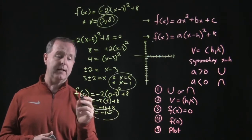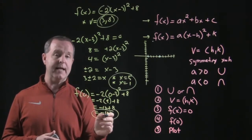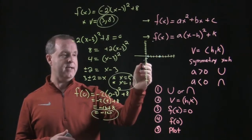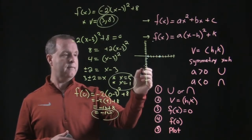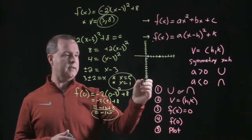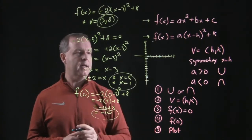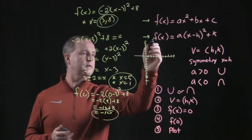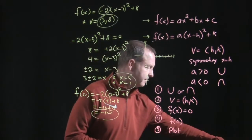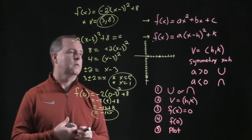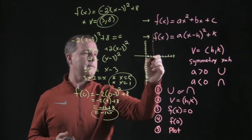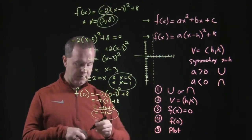And then when we solved it at 0, f(0) equals negative 10. That means when x is 0, it crosses at negative 10, right there. So those are the primary points. And we also know that it was symmetrical with the x value of the vertex.